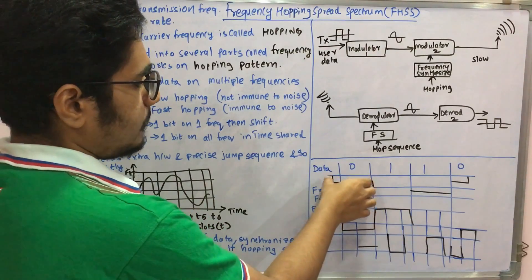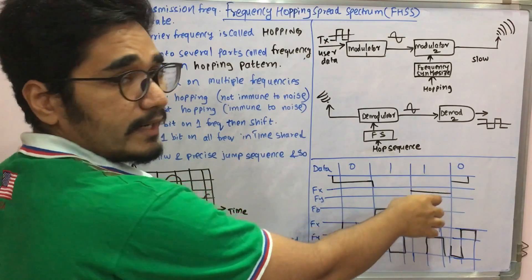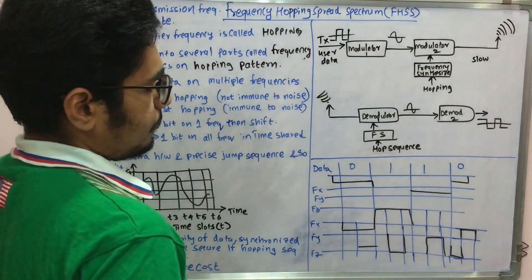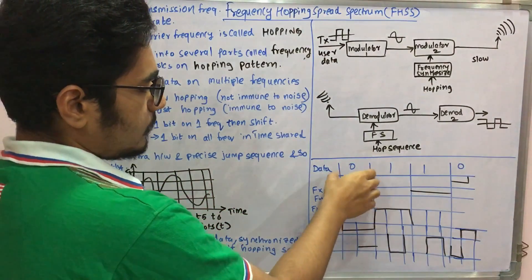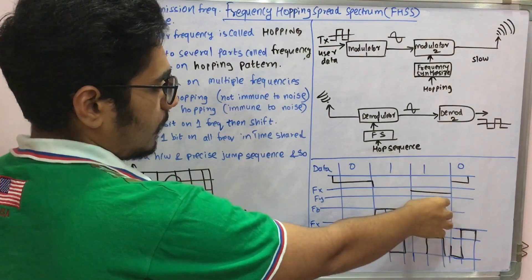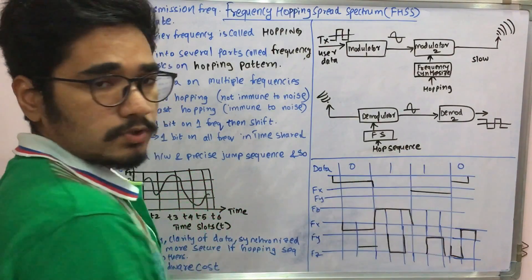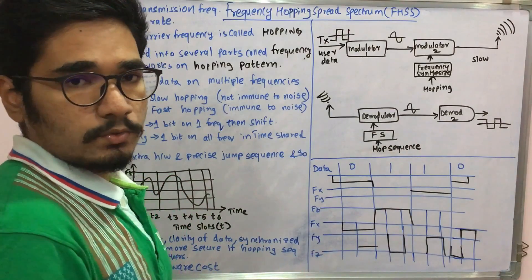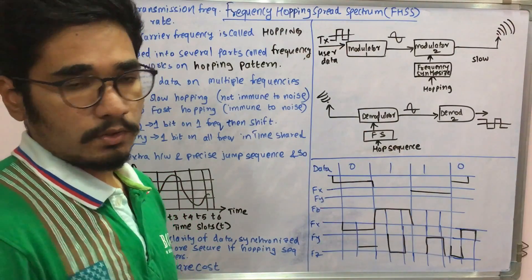In this you can see one bit is placed on one frequency at one time and then shifted later. Zero is placed on fx at one time, then later one is placed on fy at one time, and then zero is placed on fx at another time. This is slow hopping and it takes time.